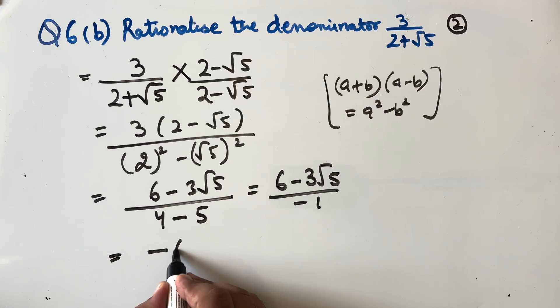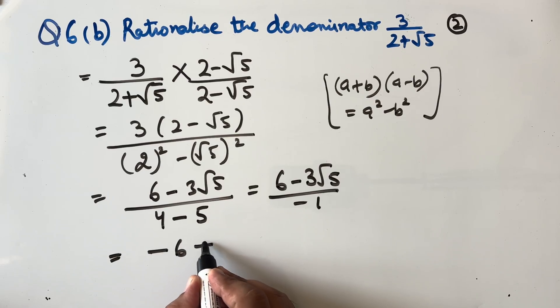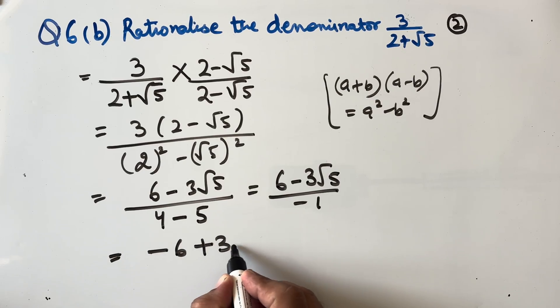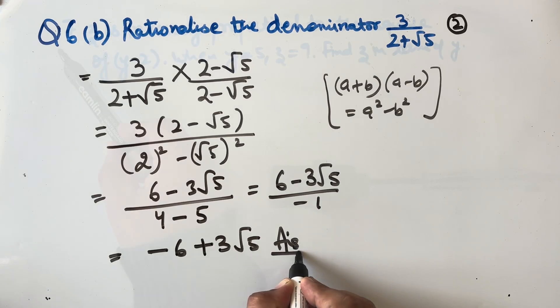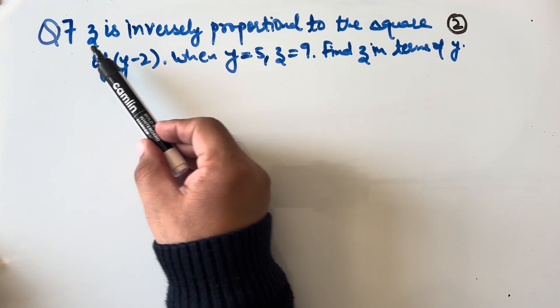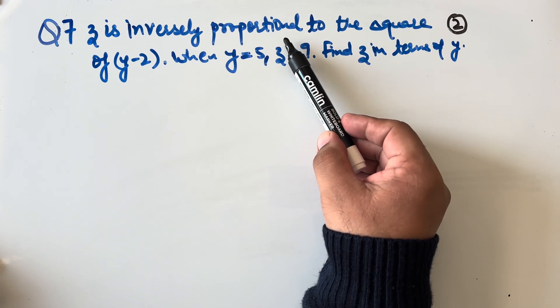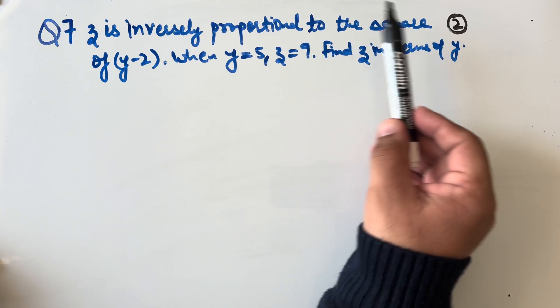This can be written as −6 + 3√5, which is our answer for 6b. Now question 7: z is inversely proportional to the square of (y − 2). When y = 5, z = 9. Find z in terms of y.